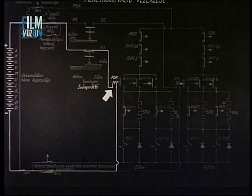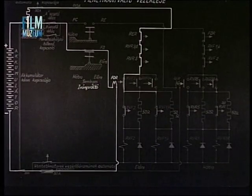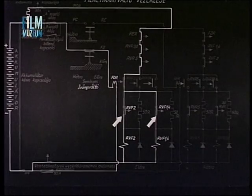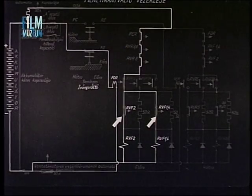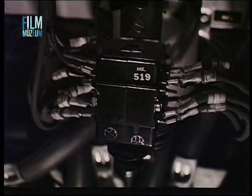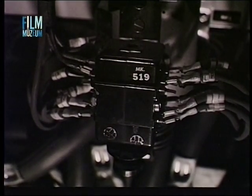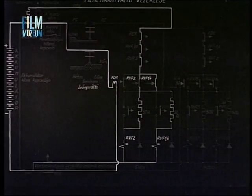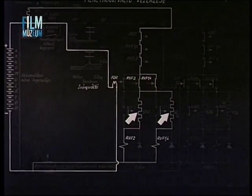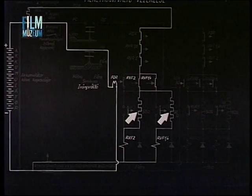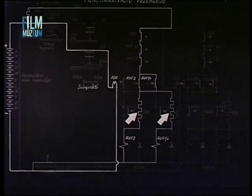When the direction control relay engages, the operating current of the direction-switching contactors first passes through the auxiliary contacts of these contactors. However, when the contactors engage, their opening auxiliary contacts interrupt the direct path of the operating current. The current then reaches the contactors' operating coils through a resistor. The higher current intensity needed for engagement is slightly reduced by the resistor, thus heating the contactor coils less.